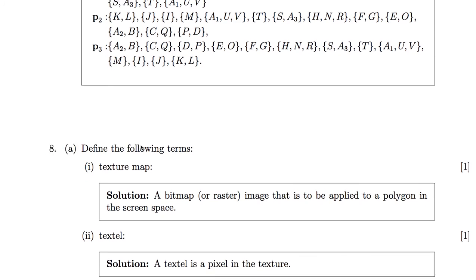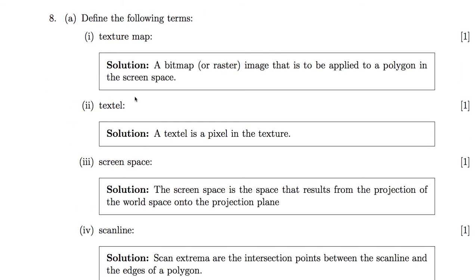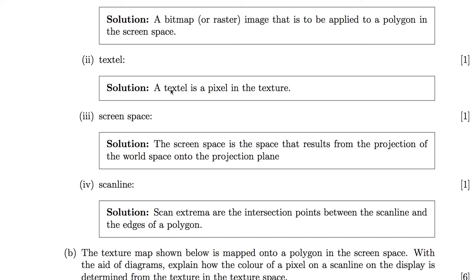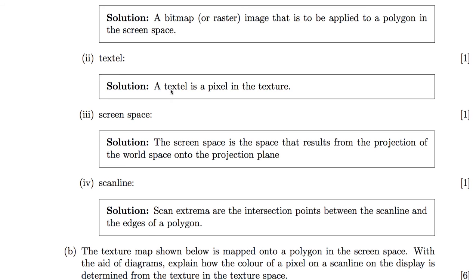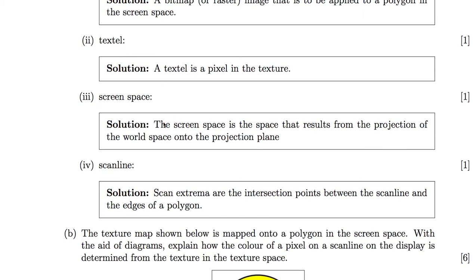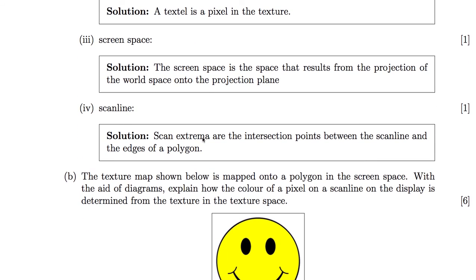Last question, 8. Define a texture map: this is a bitmap or raster image — made up of pixels — that is applied to a polygon in the screen space. A texel is simply a pixel in your texture map. The screen space is the space resulting from projection of the world space onto the projection plane. A scan line is simply a horizontal row of pixels.